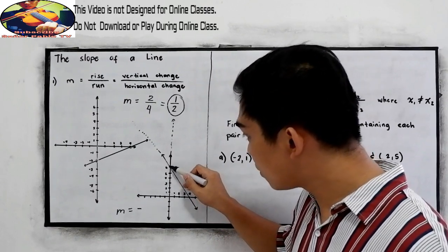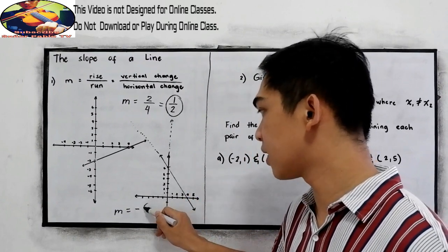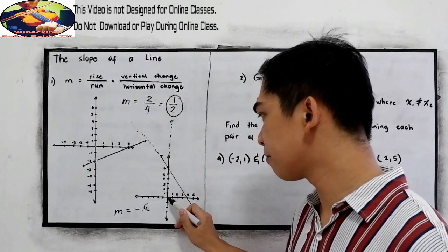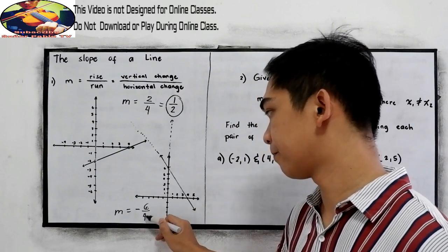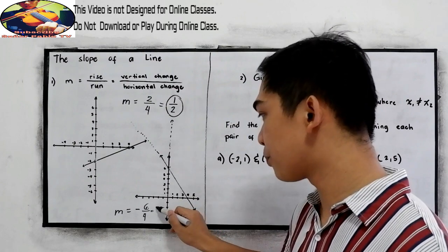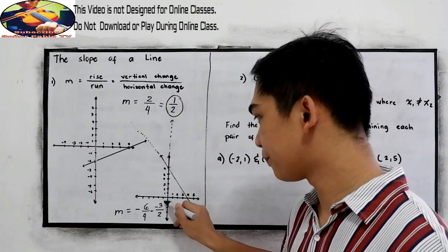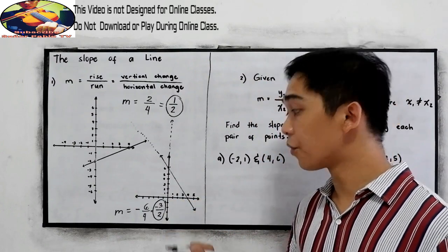So going down, 1, 2, 3, 4, 5, 6. So we have 6 over 1, 2, 3, 4, 4. Reduced in lowest term, our slope is negative 3 over 2. That would be our slope, negative 3 over 2.